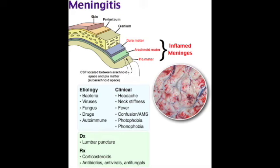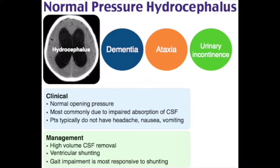Normal pressure hydrocephalus (NPH) is dilation of the cerebral ventricles with normal opening pressure on lumbar puncture. Pathophysiology is thought to be impaired CSF absorption after CNS injury such as subarachnoid hemorrhage, chronic meningitis, tumors, inflammatory diseases, or head injury. Classic clinical triad: dementia and cognitive dysfunction, gait disturbance, and urinary incontinence — remembered as 'wet, wobbly, and wacky,' or CUA (cognition, urination, ataxia). Gait is a wide-based shuffling gait, described as gait apraxia or magnetic gait, as if the feet are stuck to the floor.